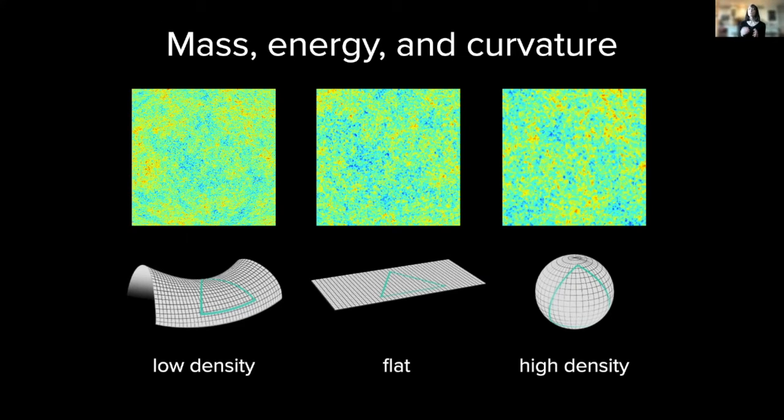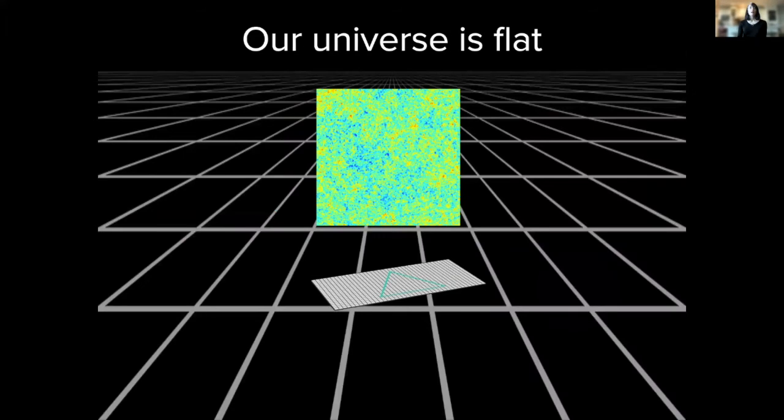A high-density universe with a different type of curvature makes the spots look larger as you see in the picture on the right. Our universe, however, is flat.